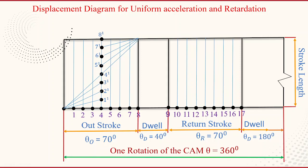The intersection of lines passing through point one and one prime is marked as a point, and similarly for two and two prime, three and three prime, four and four prime, five and five prime, six and six prime, seven and seven prime, and eight and eight prime. Mark all these intersection points and assign them labels a, b, c, d, e, f, g, h, i. Then draw a smooth curve through these points to obtain the displacement curve during the outstroke.